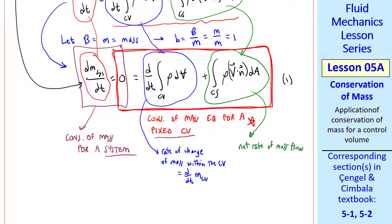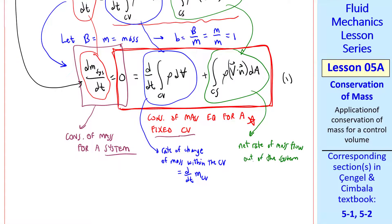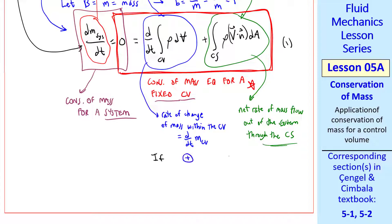This term circled in green is the net rate of mass flow out of the system through the control surface. Let's think about the signs. If this term in blue is positive, the term in green must be negative because these two terms have to add up to zero. If mass is increasing within the control volume, there must be a negative rate of mass flow out of the system. In other words, mass is flowing into the system. Similarly, if the blue term is negative, the green term must be positive.